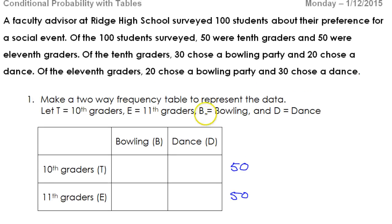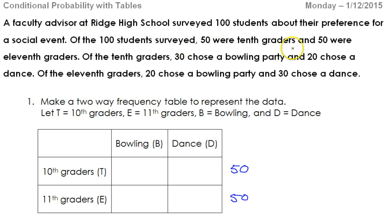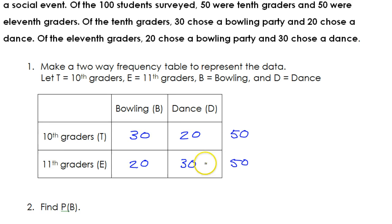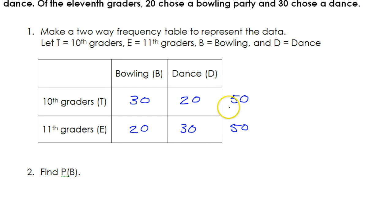What else did they say? Of the 10th graders, 30 chose bowling party and 20 chose a dance. So of the 10th graders, 30 chose bowling and 20 chose a dance. Of the 11th graders, 20 chose a bowling party and 30 chose a dance.